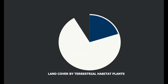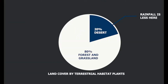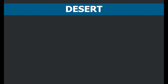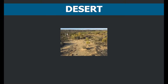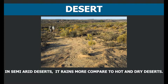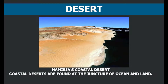Desert covers around 20 percent of the total area of Earth and rainfall here is very less — it rains only 25 centimeters annually. There are different types of deserts. In hot dry deserts, air is hot and contains very less moisture. In semi-arid deserts, it rains more compared to hot and dry deserts. Coastal deserts are found at the juncture of ocean and land.